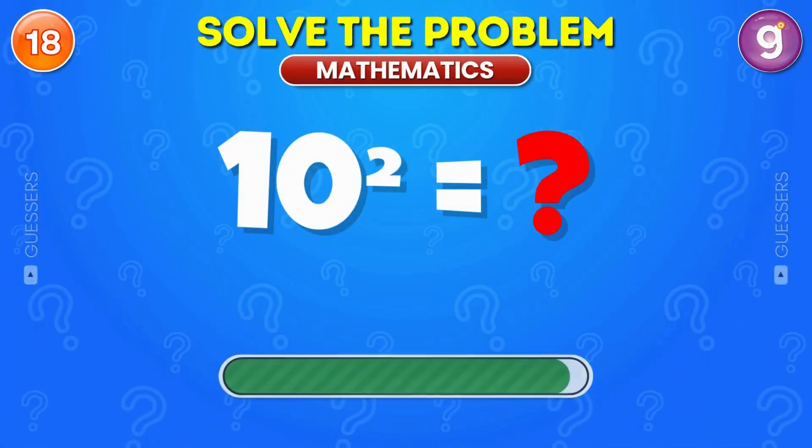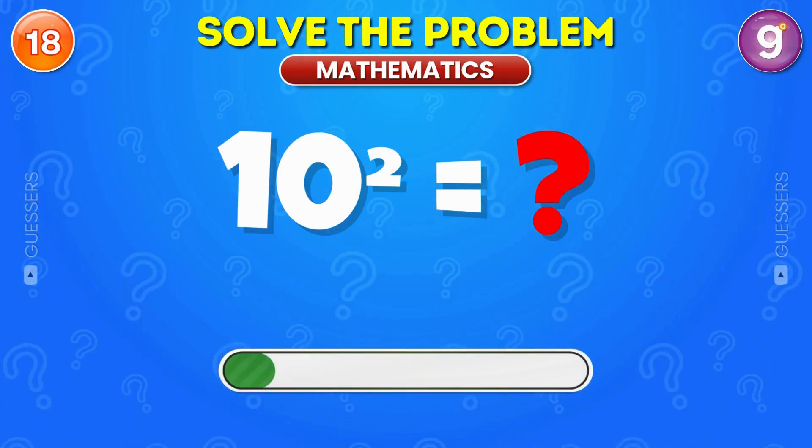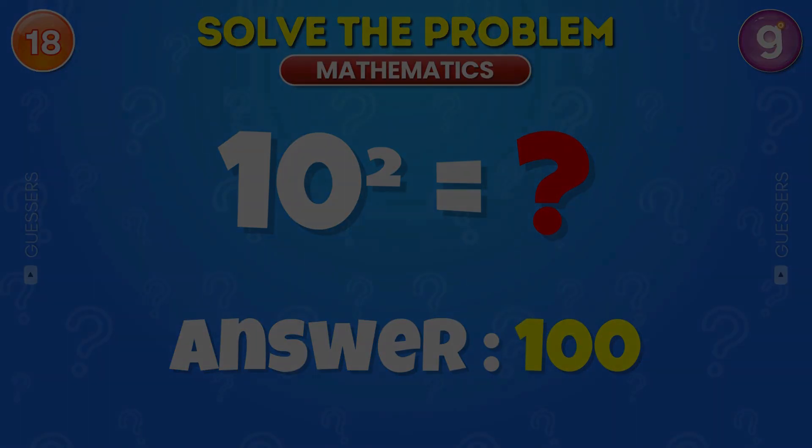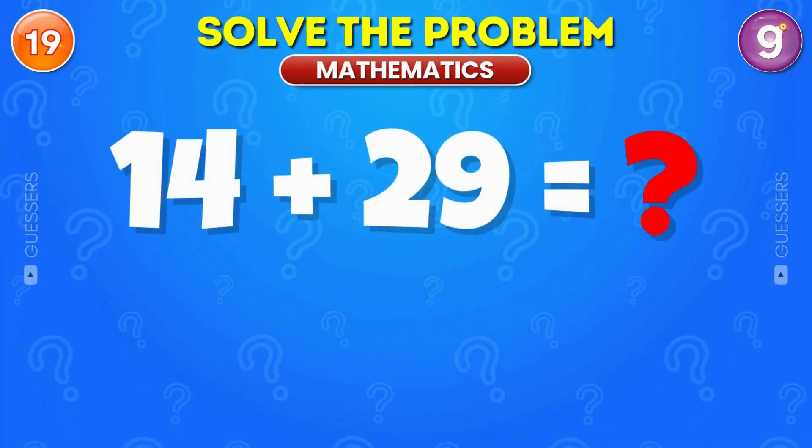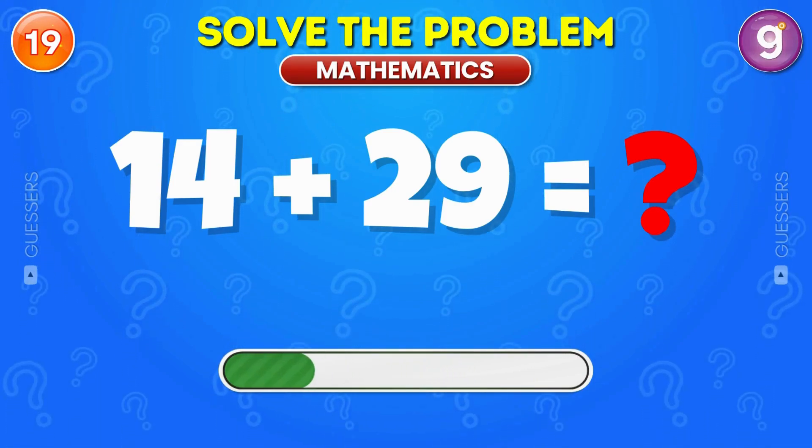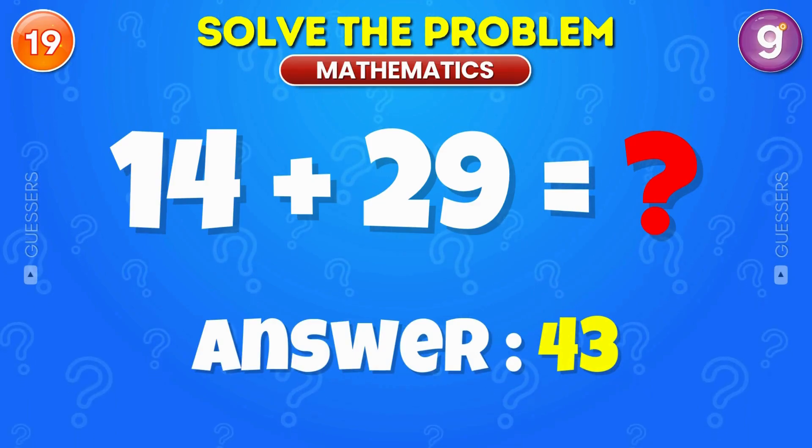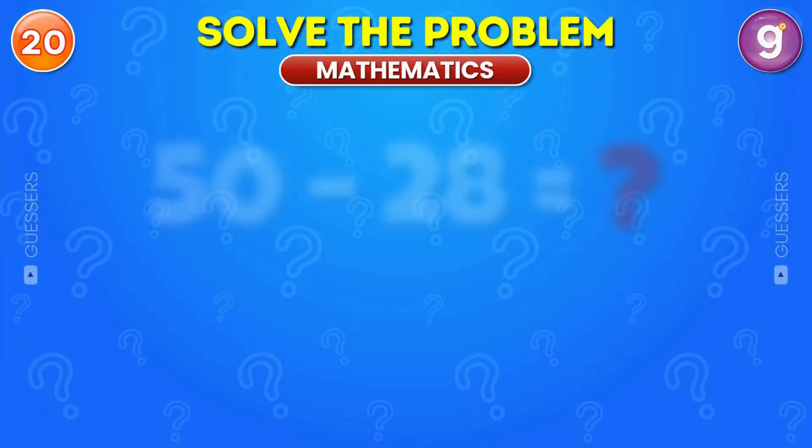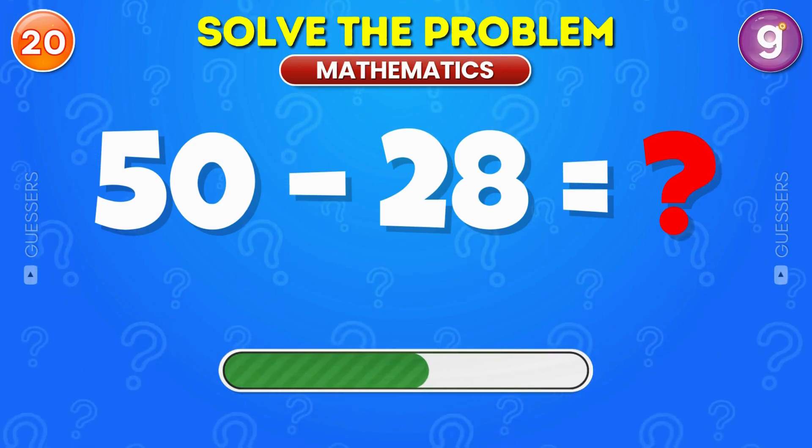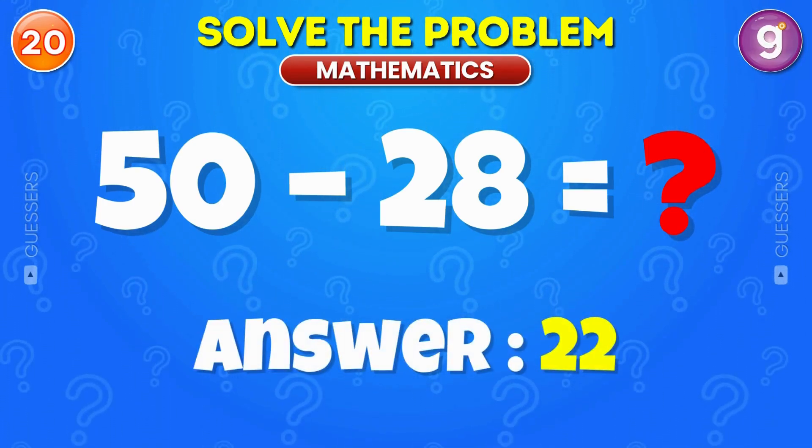What is 10 squared? It's 100. Add 14 and 29. The answer is 43. Subtract 28 from 50. The answer is 22.